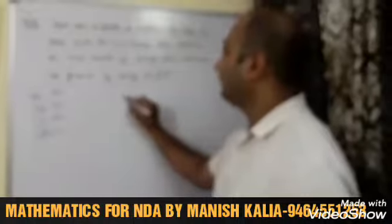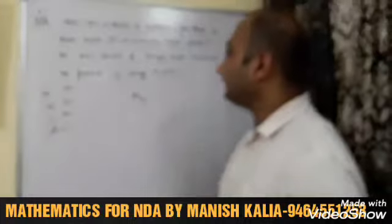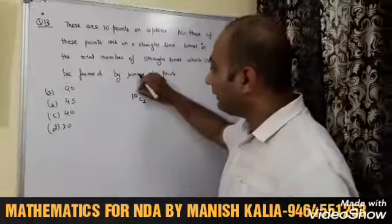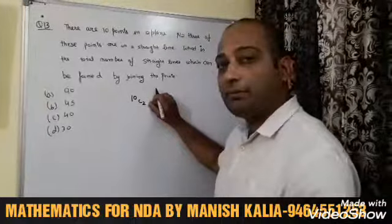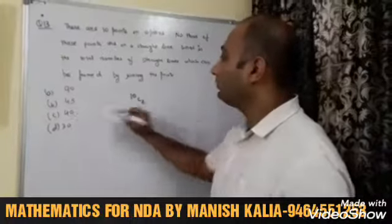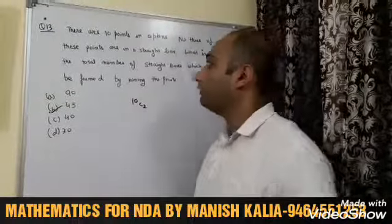The formula is simple — it is 10C2, since from the given number of points, choosing 2 points at a time forms a straight line. The value of 10C2 is 45, so the answer is 45.